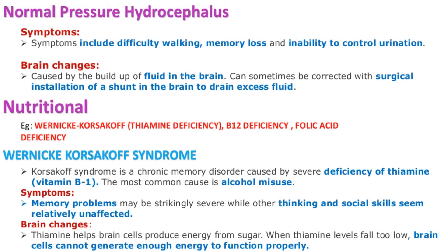Normal pressure hydrocephalus symptoms include difficulty walking, memory loss, and inability to control urination. Brain changes are caused by the build-up of fluid in the brain, and can sometimes be corrected by surgical insertion of a shunt to drain excess fluid. Nutritional causes include Wernicke-Korsakoff syndrome — Korsakoff syndrome is a chronic memory disorder caused by severe deficiency of thiamine, with the most common cause being alcohol misuse. Memory problems may be strikingly severe while other thinking and social skills seem relatively unaffected. Thiamine helps brain cells produce energy from sugar; when levels fall too low, brain cells cannot generate enough energy to function. With administration of thiamine or vitamin B12, these symptoms are usually reversible.